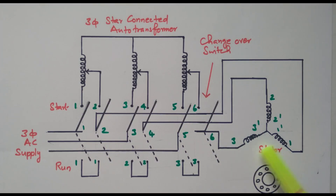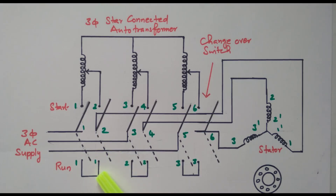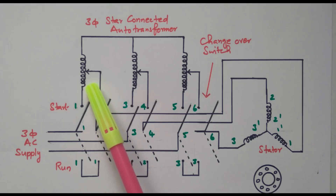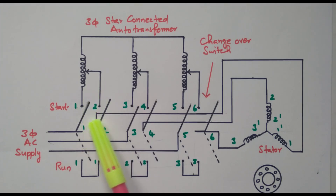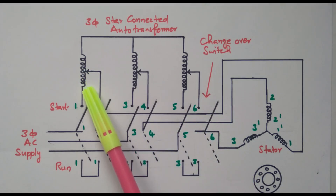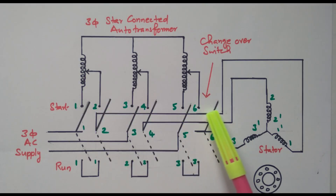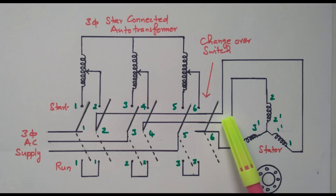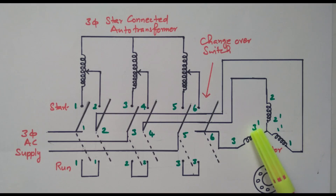Once the motor starts at the rated speed, the changeover switch is placed in the running position. During the running position, the entire voltage is applied, and the motor rotates at the rated speed by taking the rated current and rated voltage. The auto-transformer initially reduces the voltage applied to the stator to reduce the high starting current. By slowly changing the position, the voltage applied to the stator is gradually increased until the motor takes the full rated current and rated voltage and rotates at the rated speed.